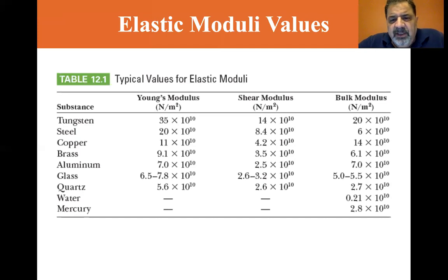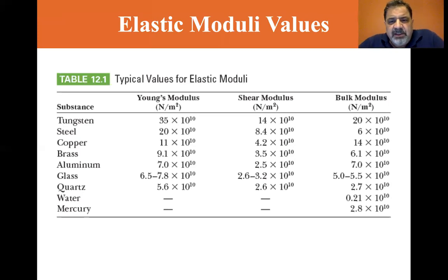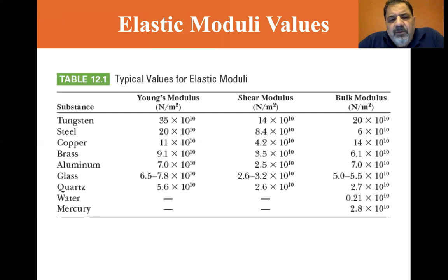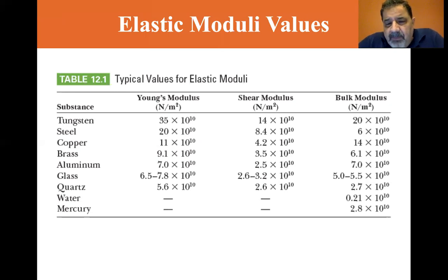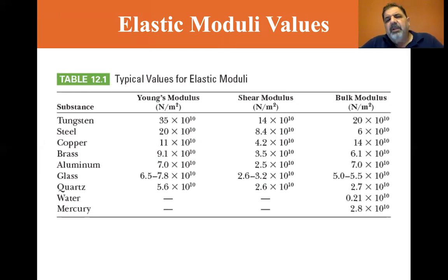The ranking is pretty much the same for shear modulus: tungsten is 14 × 10¹⁰ N/m², steel is 8.4, copper is 4.2, brass is 3.5, aluminum is 2.5. Glass is 2.6 to 3.2 and quartz is 2.6.